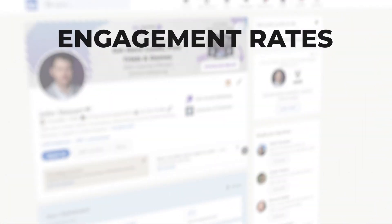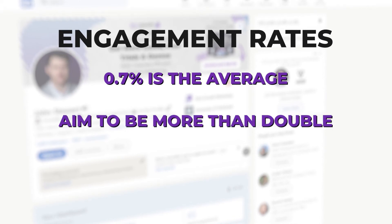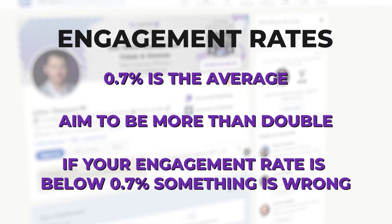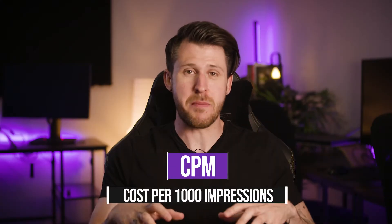Next up is engagement rate. This is very similar to click-through rate — it's just how many people engage with your ads. This should be on average 0.7%, and the same rules apply: you should be looking to be more than double that ideally. If you're below 0.7%, things are going wrong. So if you're below 0.3% on your click-through rate and 0.7% on your engagement rate, it means you've got a problem before the traffic reaches your website, so you need to look at things early on in the funnel.